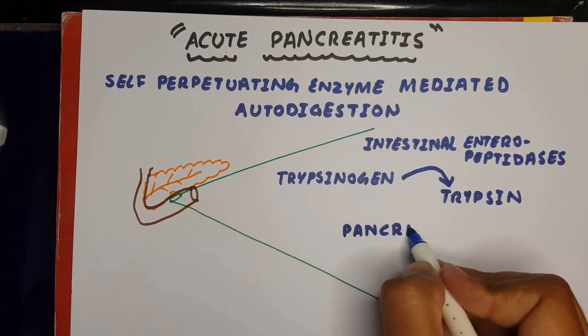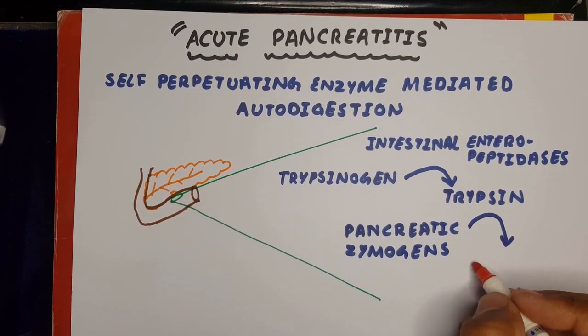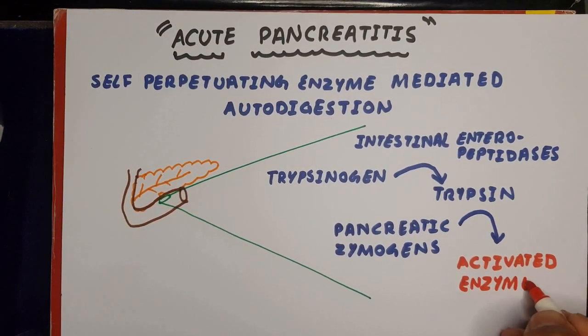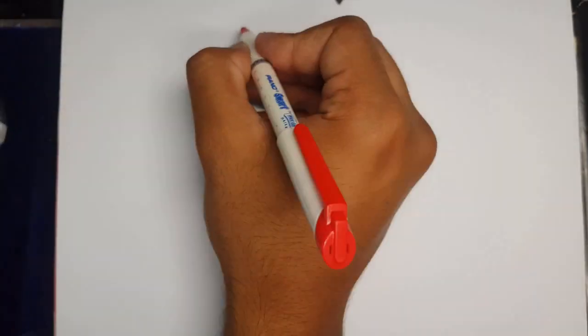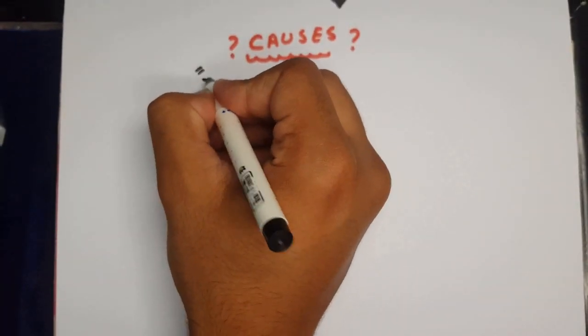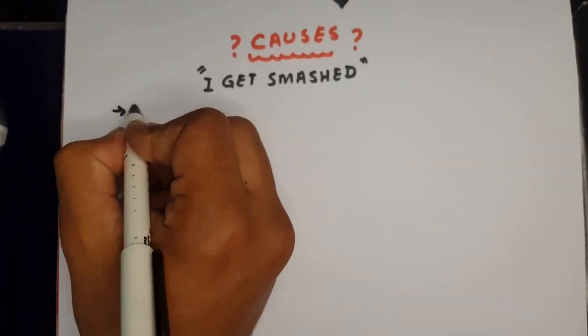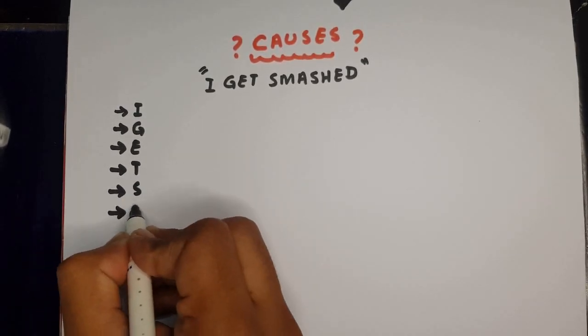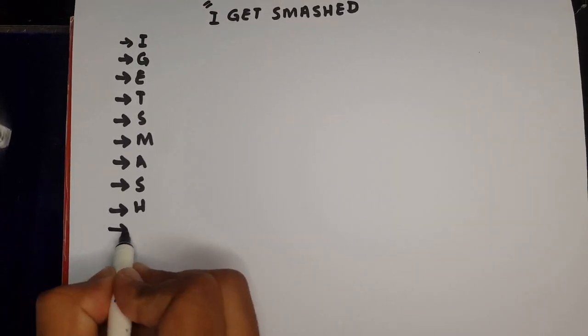This is what causes the inflammation, hence pancreatitis. Imagine the pancreas getting smashed, causing all the bad enzymes to ooze out. So, I GET SMASHED is a mnemonic we can all agree on.